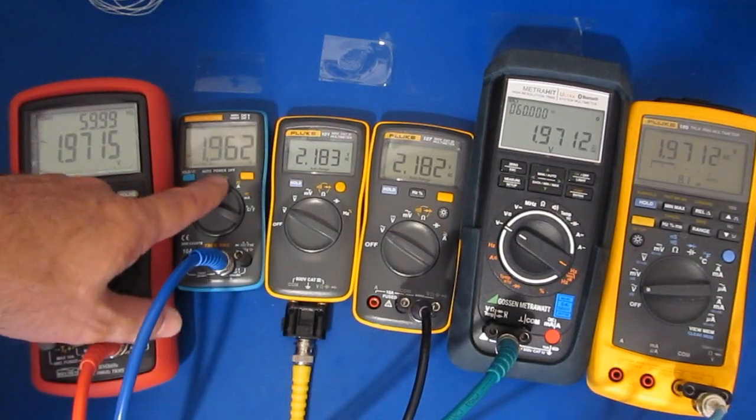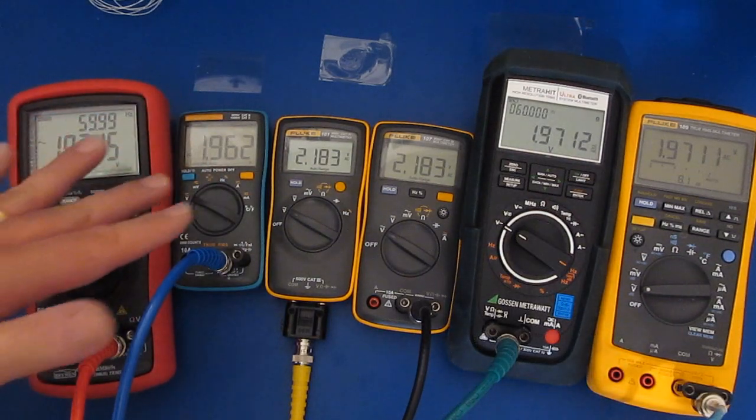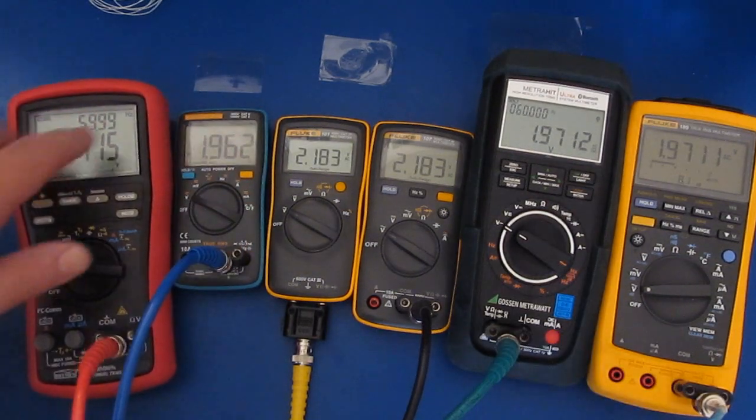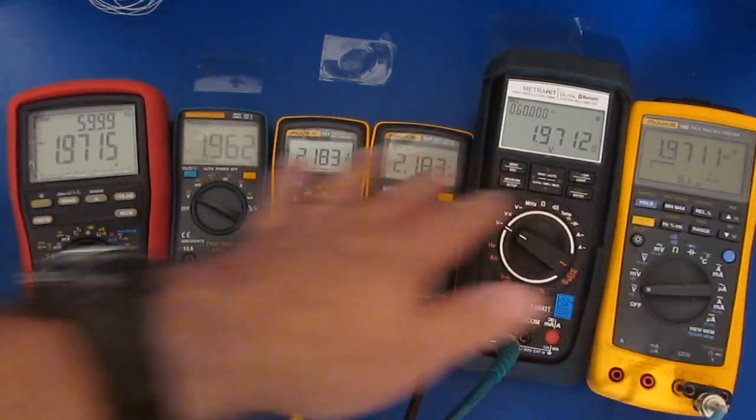I suspect the reason this is lower than these is the 3 dB point for this meter I think was something like maybe 3 kilohertz or something. These three RMS meters that we're comparing it against are all good well over 100 kilohertz.